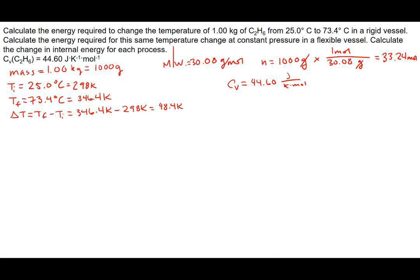For the constant pressure part of the calculation, we're going to need to determine the heat capacity at constant pressure, CP. In an ideal gas situation, CP is equal to CV plus R. So we'll just simply make the assumption that ethane is going to act like an ideal gas and add CV plus R: 44.60 joules per Kelvin per mole plus 8.314 joules per Kelvin per mole, which comes out to 52.91 joules per Kelvin per mole. That's going to be our CP.